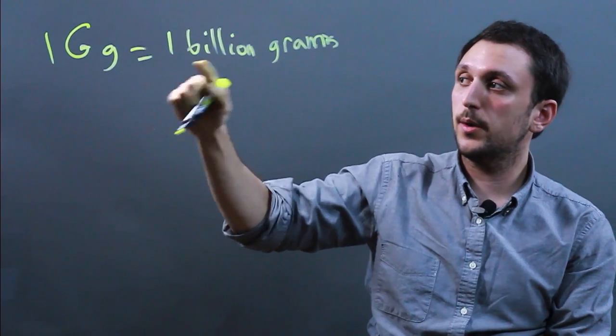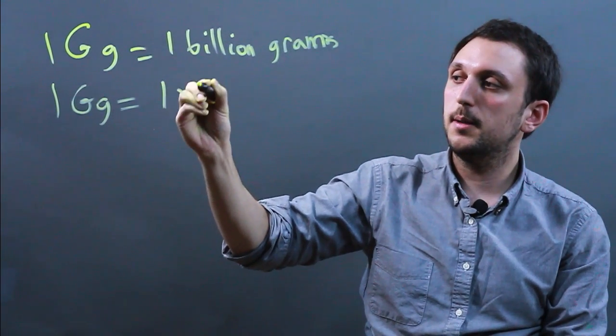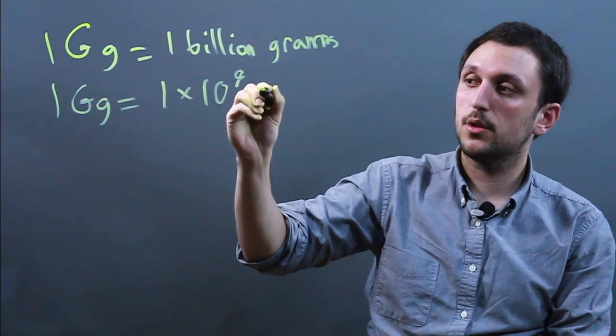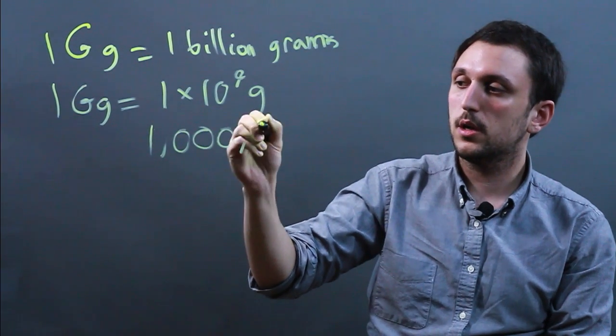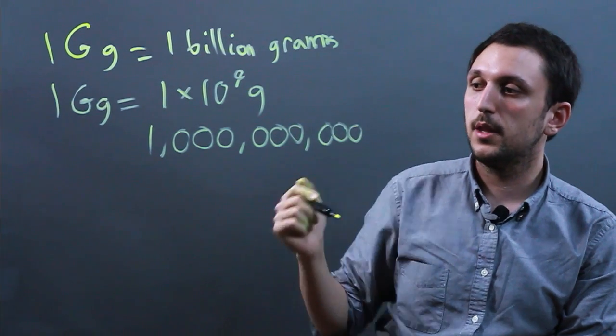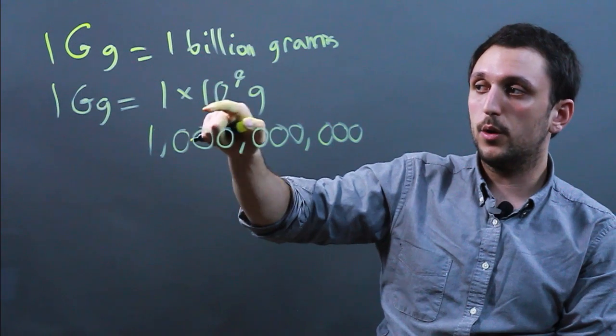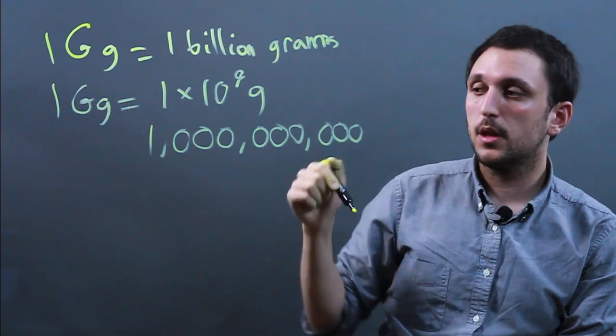Another way to write that would be to say one gigagram equals one times ten to the ninth grams or one, zero, zero, zero, comma, zero, zero, zero, comma, zero, zero, zero. And basically when you say one times ten to the ninth, that means one followed by nine zeros, grams.